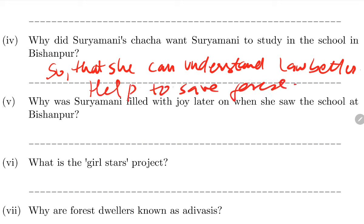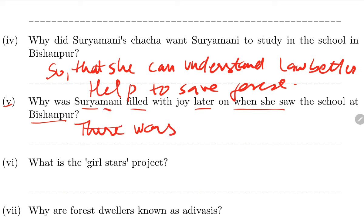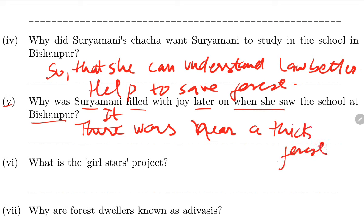Why did Suryamani fill with joy later on when she saw the school at Bishanpur? Because there was a thick forest nearby. The school was near a thick forest, so she would not have to go far from the forest - that is why she was happy.